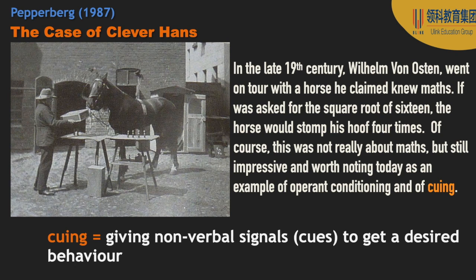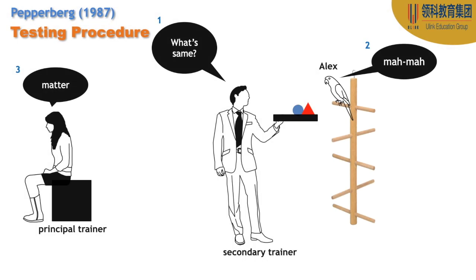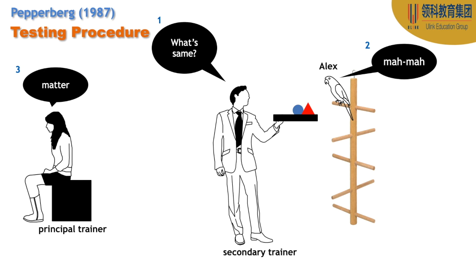Cueing is simply giving nonverbal signals to get a desired behavior, especially from an animal. In the test graphic, the principal trainer is turned away mainly to avoid cueing. Why is she there at all? Her main purpose is to act as a translator for Alex, because she knows Alex's responses better than the secondary trainer. For example, in the case of 'mama,' she'll be able to confirm it as 'matter.' She's there as a way to check that the answers are what she knows them to be.